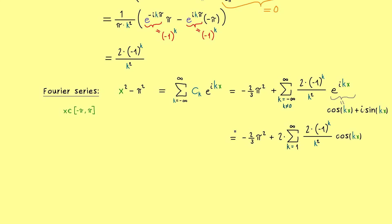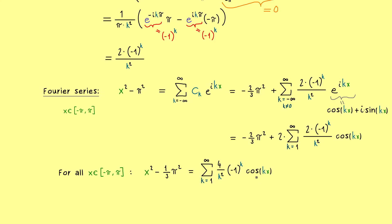Let's make it a little nicer by bringing the constant to the left-hand side. For all x in our interval: x² − (1/3)π² = Σ [4/k² · (−1)^k · cos(kx)], summed from k = 1 to infinity. We know even more: the convergence of this series is uniform in x. So the theory of Fourier series gives us a nice identity for an infinite sum, and each point x in the interval can yield a different infinite sum formula.